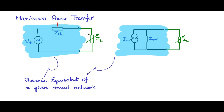When ZL is connected across the load terminals, there is power dissipation in this impedance and a power loss in ZL. Likewise in the case of the Norton equivalent, both power losses will be the same because the internal fixed circuit is the same for both equivalents.